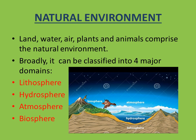What is a natural environment? Land, water, air, plants, and animals comprise the natural environment — all things present in nature are called natural environment. Broadly, natural environment can be classified into four major domains. The word domain means area, so the natural environment has four major areas or subcategories.